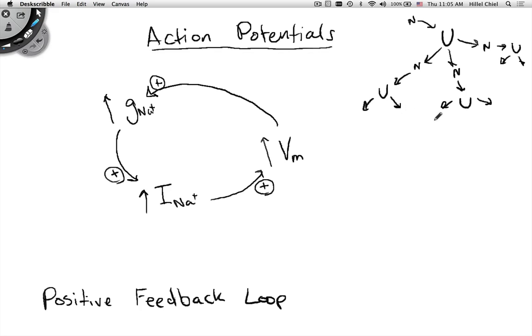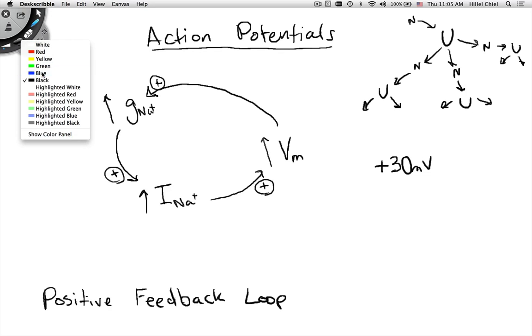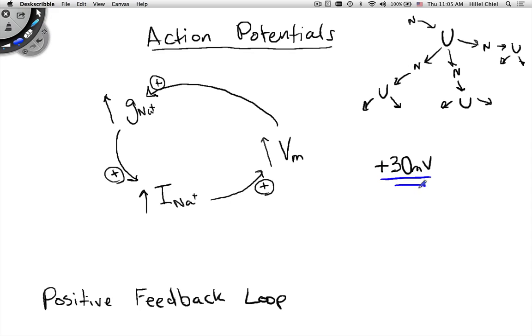So what you have is, going back to the action potential, an explosive, very rapid change in the potential that takes you close to, but not all the way to, the Nernst potential of sodium, which is plus 55. Instead, you get to about plus 30 millivolts. At that point, two things happen that break the positive feedback loop.